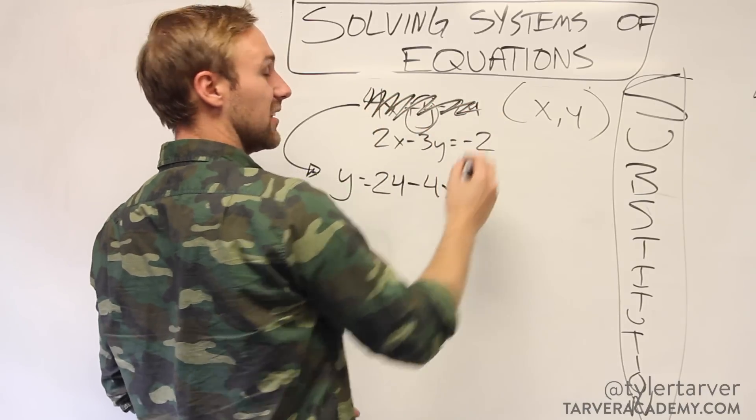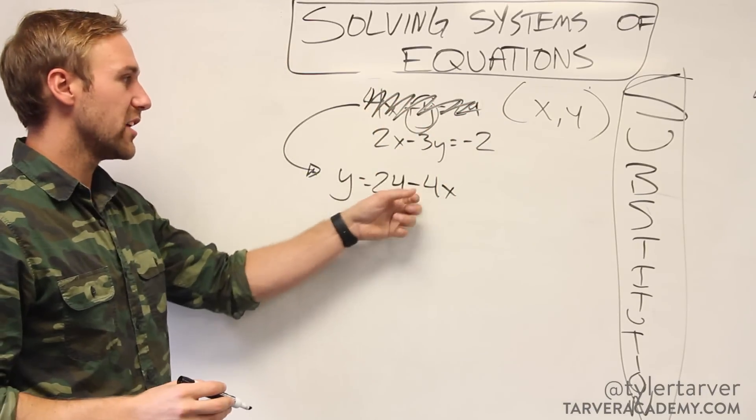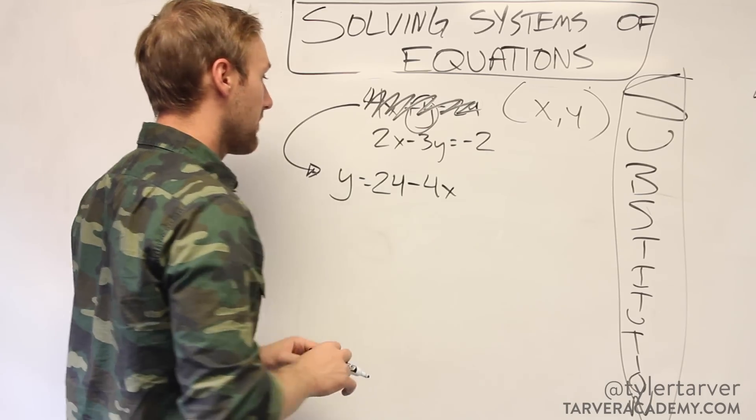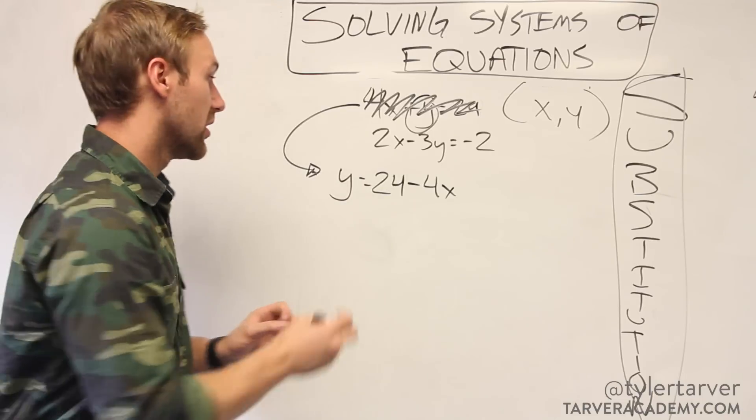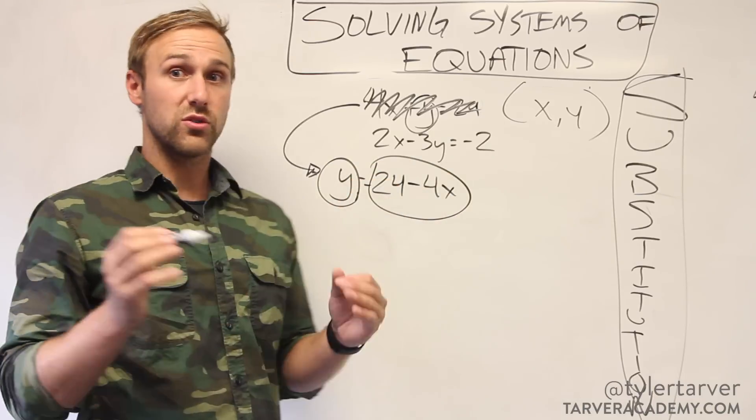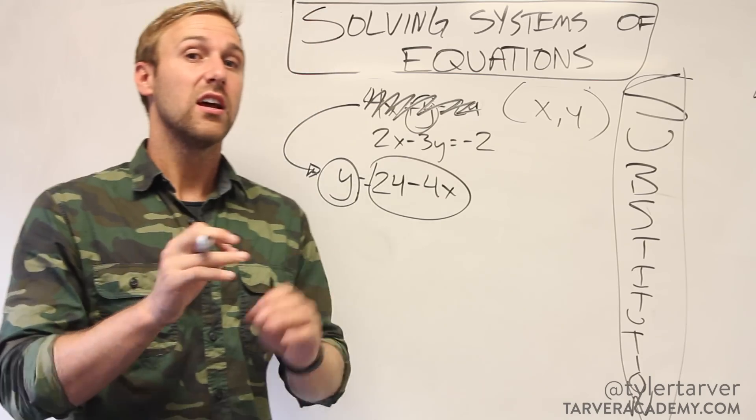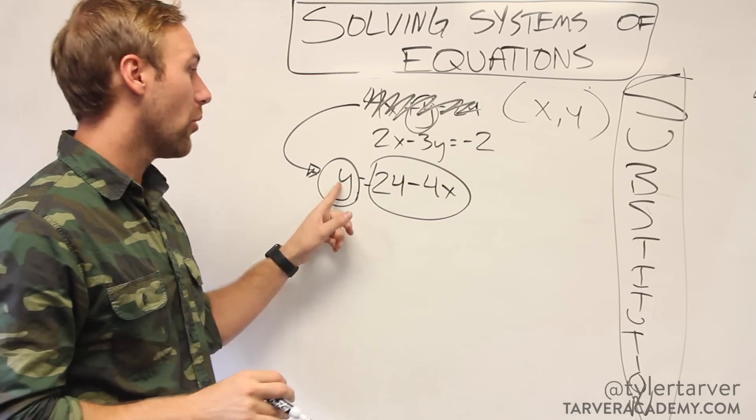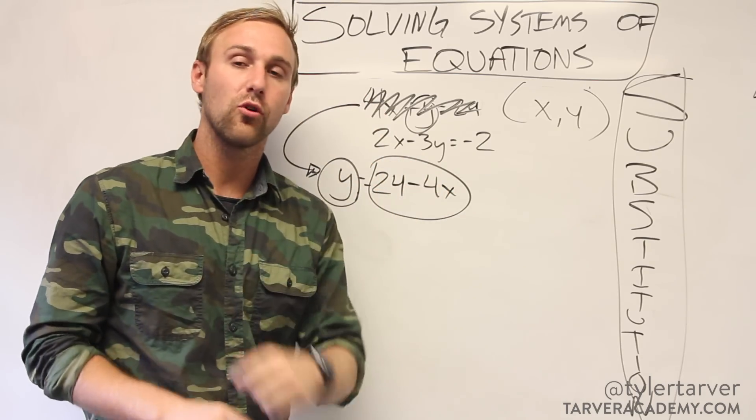I'm going to mark this out so we don't think it's still in play. So these are my two equations. These are two different lines. I want to find out where they cross. So as I said earlier with substitution, we know that something is equal to something else. They are supposed to be equal. They're supposed to be the exact same.